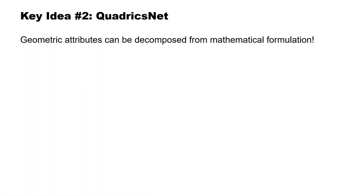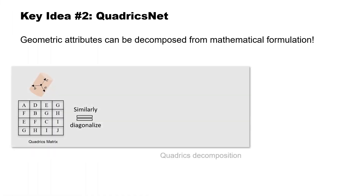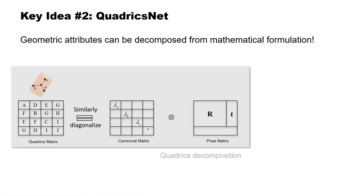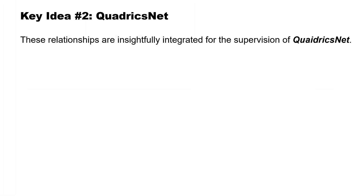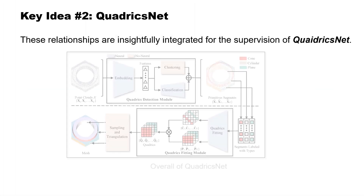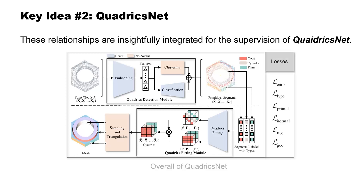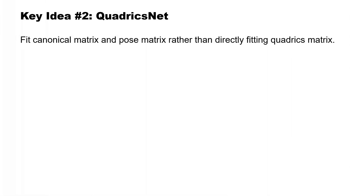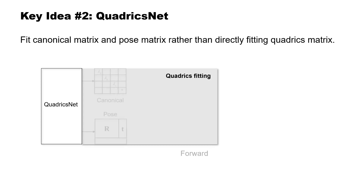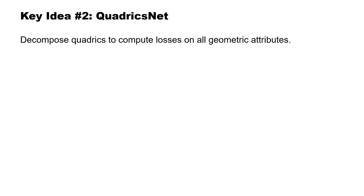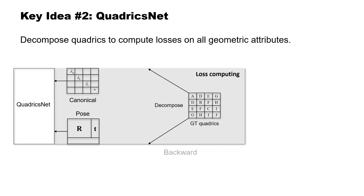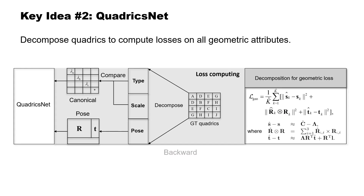Key idea 2 — QuadricsNet. Exploring along this line, we find that geometric attributes can be decomposed from the mathematical formulation. These relationships are insightfully integrated for the supervision of QuadricsNet. In the network design, we fit the canonical matrix and pose matrix separately instead of directly fitting the quadrics matrix, and we decompose quadrics to compute losses on all geometric attributes.